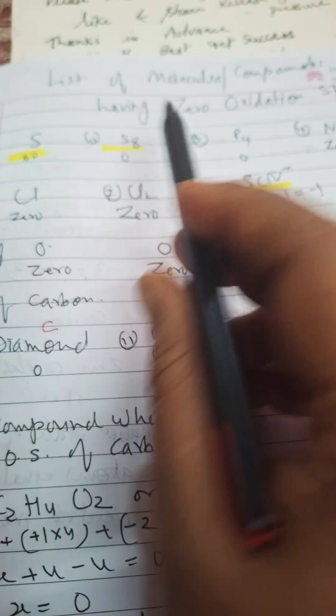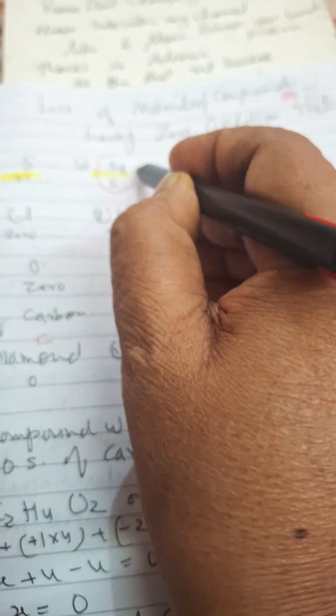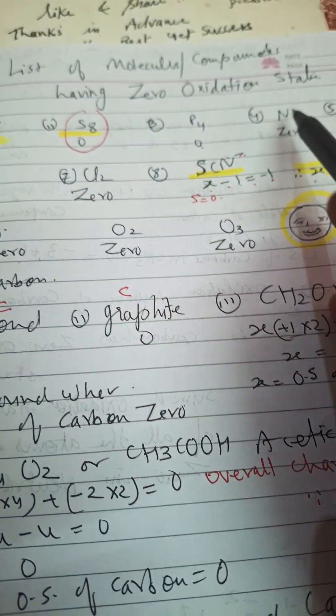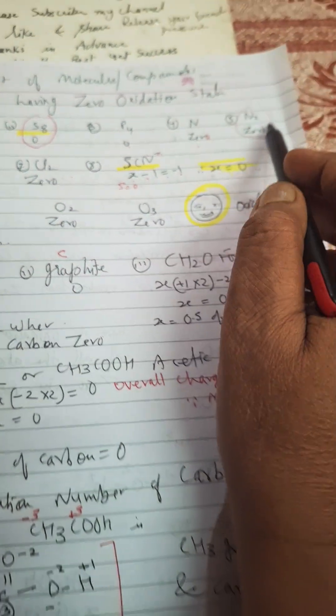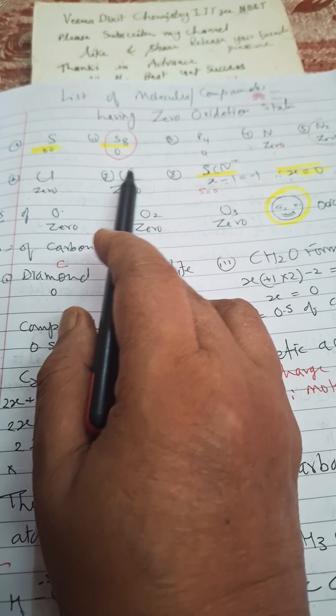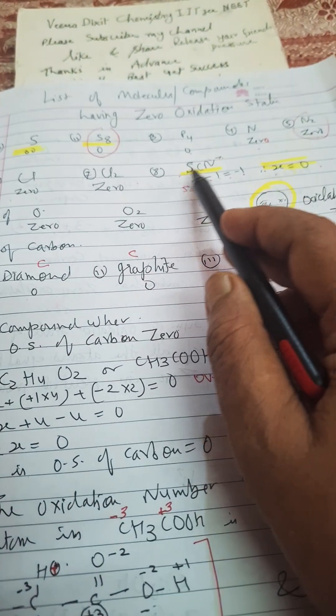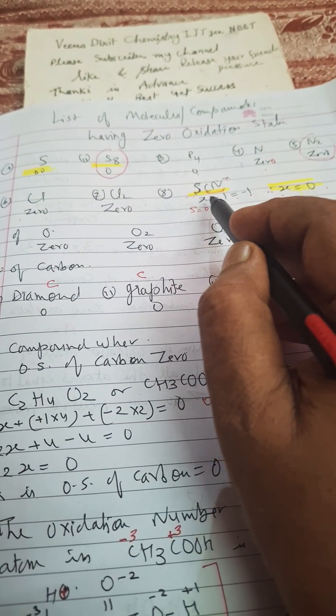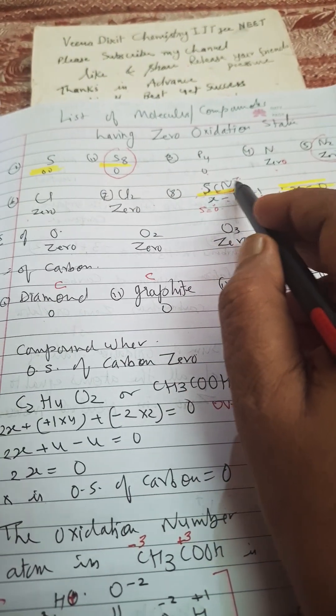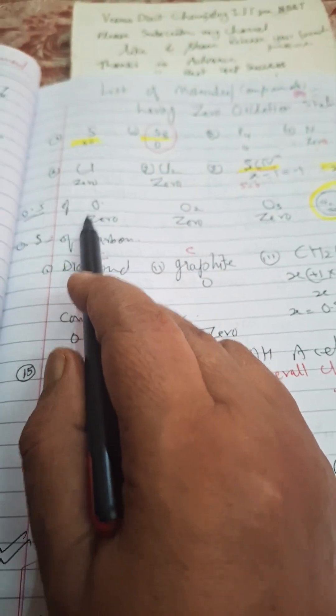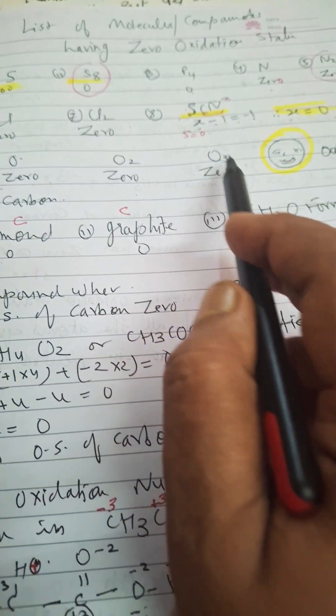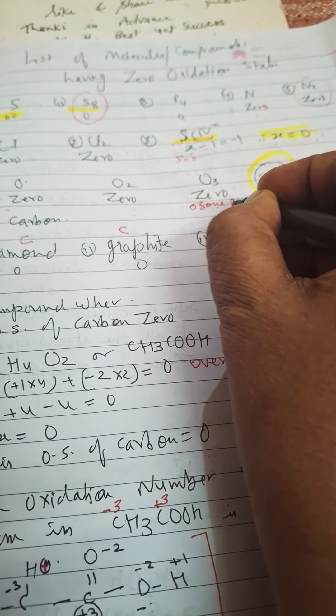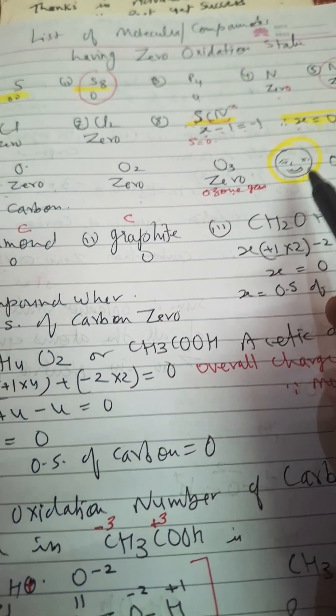Sulfur atom has zero oxidation state. S₈ molecule also has zero oxidation state. P₄ molecule has zero oxidation state. Nitrogen N₂ is zero. Cl₂ is zero oxidation. In the case of CN⁻, this whole CN is having minus one, so it actually is having zero, then only it will become minus one. Oxygen O₂ is zero, and ozone O₃ gas is also having zero oxidation state.